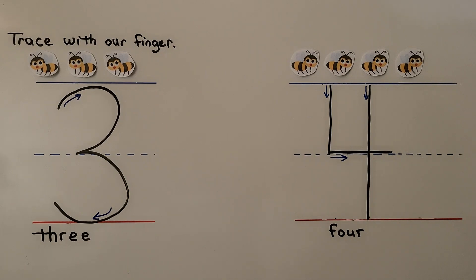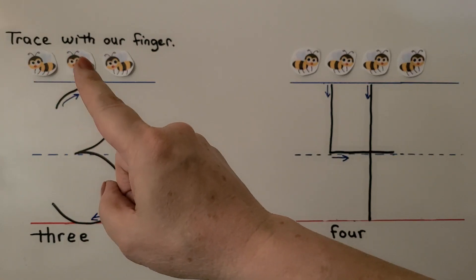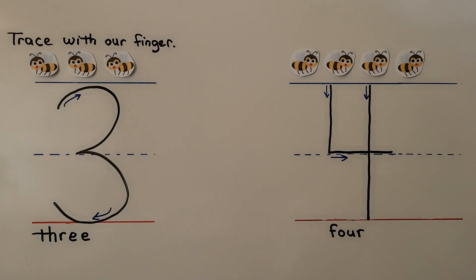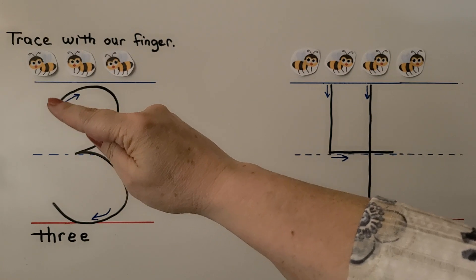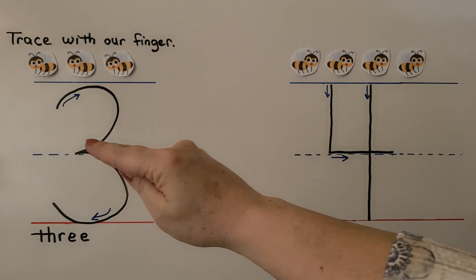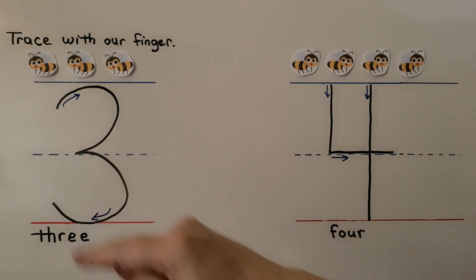We can count the bumblebees and trace the number with our finger. There's one, two, three bumblebees. For the right-handed students, we start here, and we come around to the middle dotted line, and then we come around again and come up a little bit. That's three.